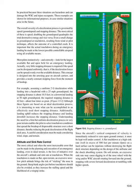This concept is designed into the arresting gear on aircraft carriers. For example, assuming a uniform 2G deceleration landing into a headwind with a 25 mph ground speed, the stopping distance is about 10.5 feet. In a downwind landing at 50 mph ground speed, the required stopping distance is 42 feet — about 4 times as great. Landing uphill reduces stopping distance; landing downhill increases it. Understanding the need for a firm but uniform deceleration process in very poor terrain enables the pilot to select touchdown conditions that spread the breakup of dispensable structure over a short distance, reducing peak deceleration of the flight deck area. A careful consideration must be made considering wind, slope, and terrain.